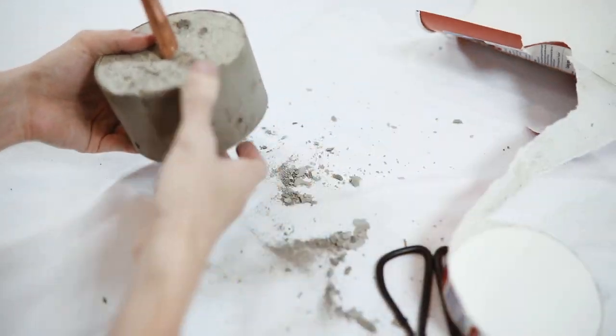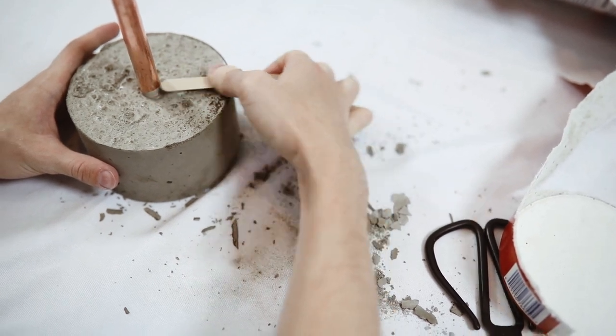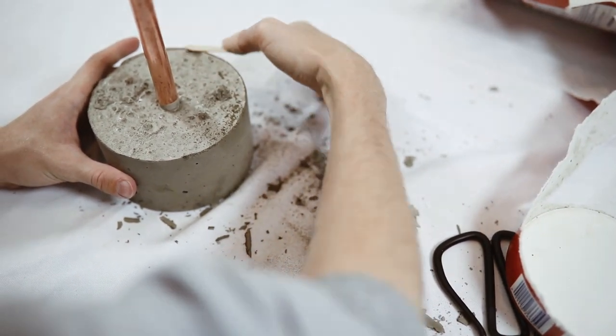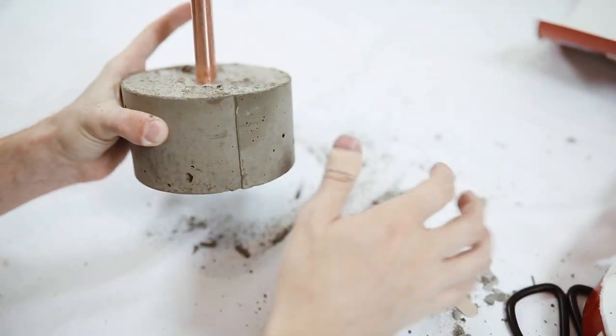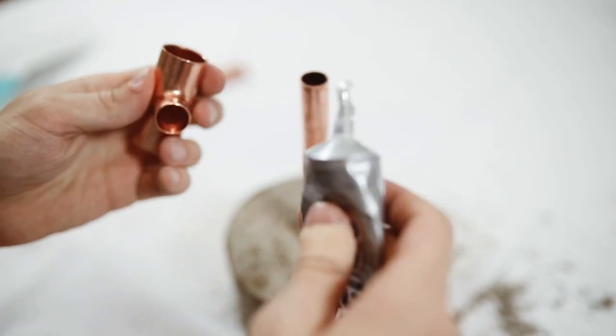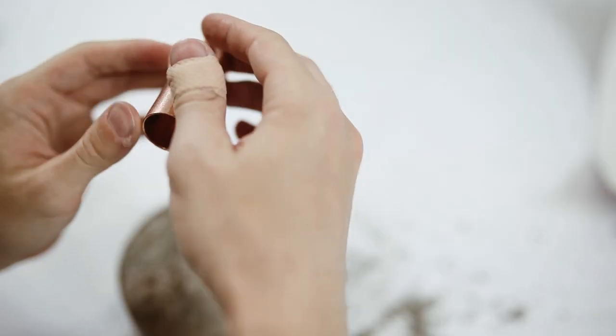And then I used an emery board or nail file just to sand down any rough edges so it wasn't pokey or prickly or anything like that. This is how you can perfect your concrete projects as well. And then just a little bit of E6000 to glue this little joint connector on, which is just like a three-way connector, and I glued it to the top of my pole.